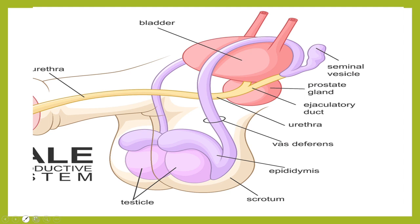You will have to understand the anatomy. This is the testis, this is the epididymis, this is the vas deferens. The vas deferens joins the seminal vesicle duct here. This is the seminal vesicle and together they form the ejaculatory duct, which then moves out through the urethra. So this fructose is mainly produced by the seminal vesicle, and if there is any problem here, you may not find any fructose in the semen.